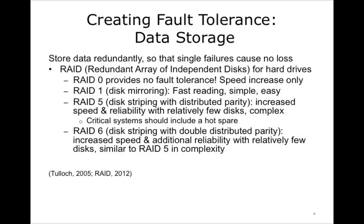In its simplest form, fault tolerance is as simple as copying a file to two locations — for instance, to a hard drive and to a flash drive. However, this simple duplicate copy method scales poorly, so best practices for data storage include technologies that automatically store data on multiple physical devices. The most common of these is RAID, or Redundant Array of Inexpensive Discs — a set of multiple drives that automatically distribute data so that even with the loss of any one drive, all data is still available. All RAID works by breaking data into small blocks stored on separate drives.